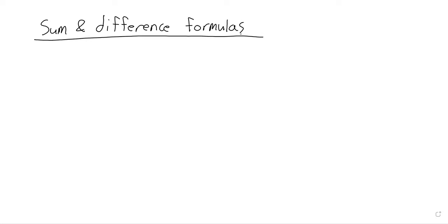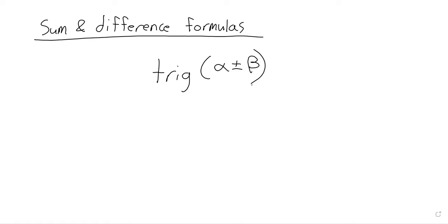The sum and difference formulas are for when you have a trig function evaluated at a sum or a difference. There are really only three sum and difference formulas the way this phrase is usually used: one for the sine, one for the cosine, and one for the tangent.